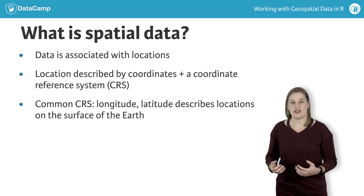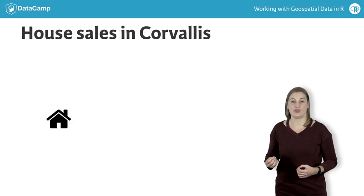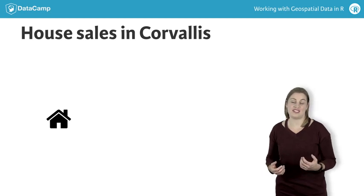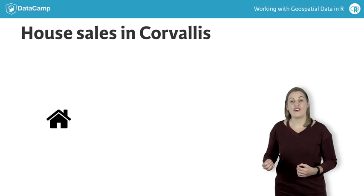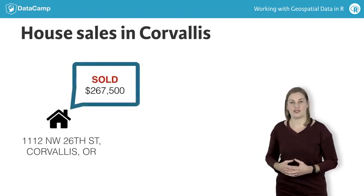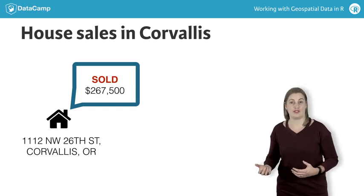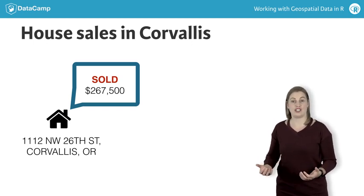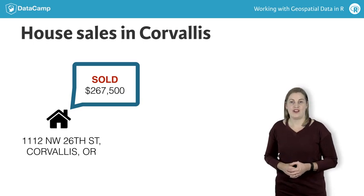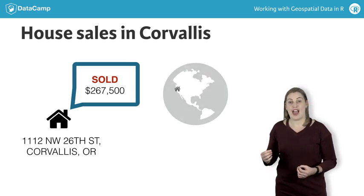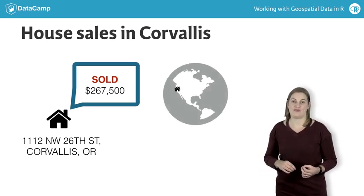In this chapter, you'll be working with house sales from 2015 where I live, a town called Corvallis. When a house sells, the most obvious data is the price and the address of the house. But there may also be data on how big the house was, how many bedrooms it has, how many bathrooms, how much land, and what condition it is in.